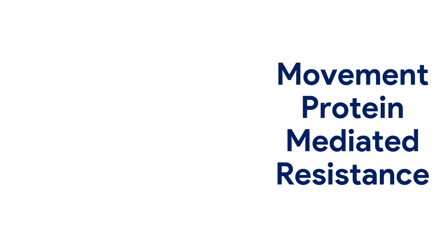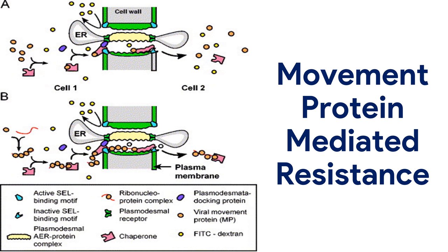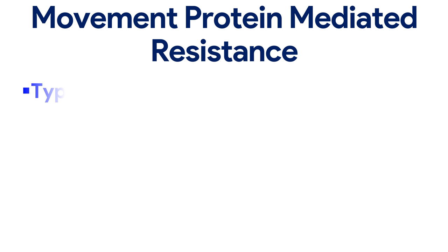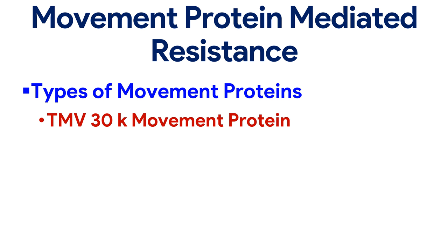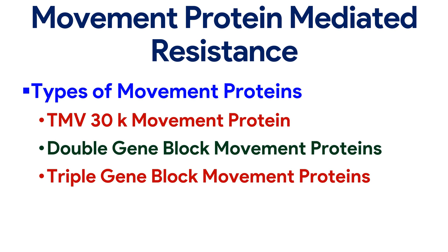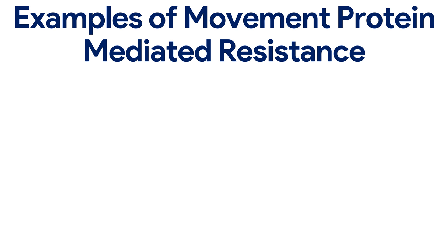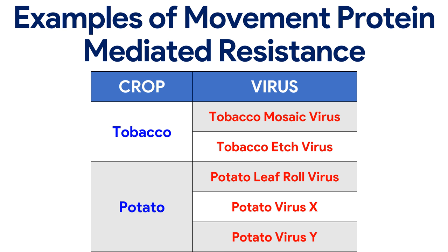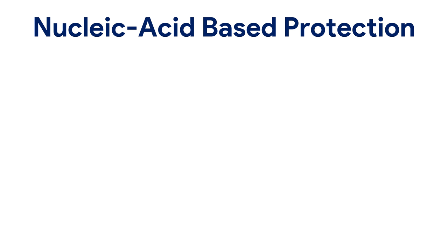Movement protein-mediated resistance: a movement protein is a non-structural protein encoded by some plant viruses to allow their movement from one infected cell to neighboring cells. Many, if not all, plant viruses encode a movement protein and some express more than one. Types include the TMV 30K movement protein, double gene block movement proteins, triple gene block movement proteins, and partiviral CP. Examples: tobacco gained help in controlling the spread of tobacco mosaic virus and tobacco etch virus to other parts of the plant; potato gained help in controlling potato leaf roll virus, potato virus X, and potato virus Y.